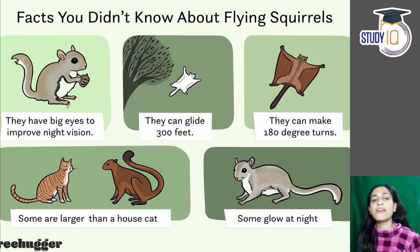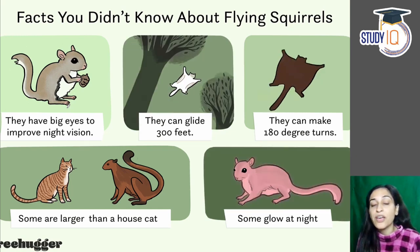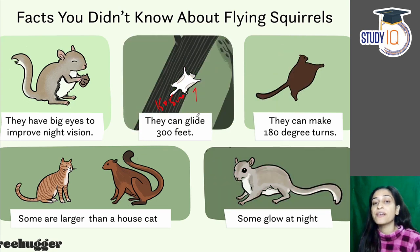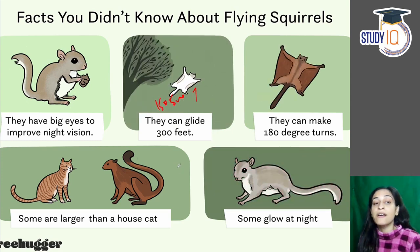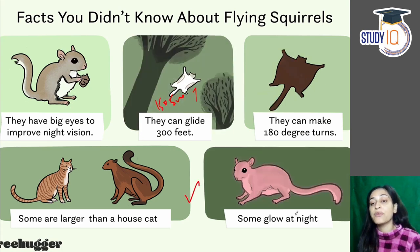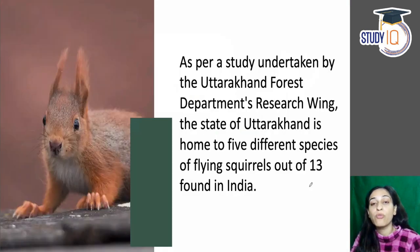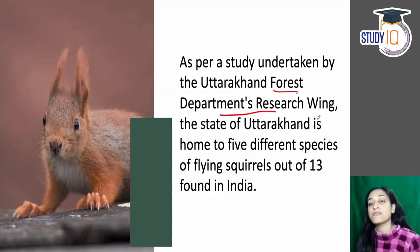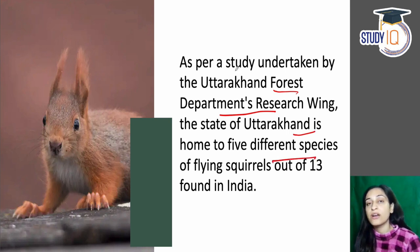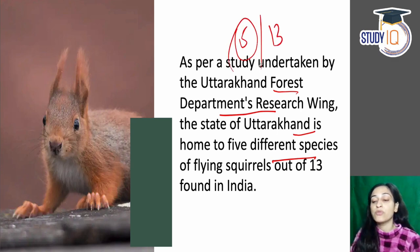Some key facts about flying squirrels: they have large eyes for night vision. They can glide 150 to 500 feet and turn 180 degrees. Some flying squirrels are bigger than house cats. The Uttarakhand Forest Department research wing has confirmed 5 different species of flying squirrels in the state. In India, there are 13 total species.